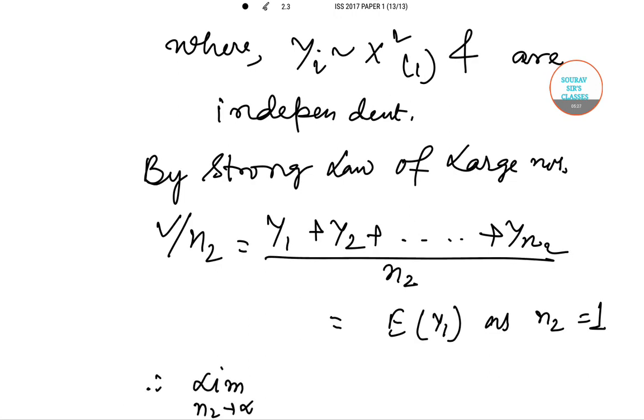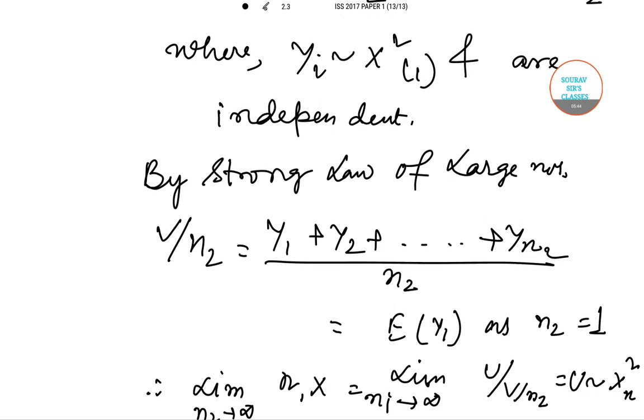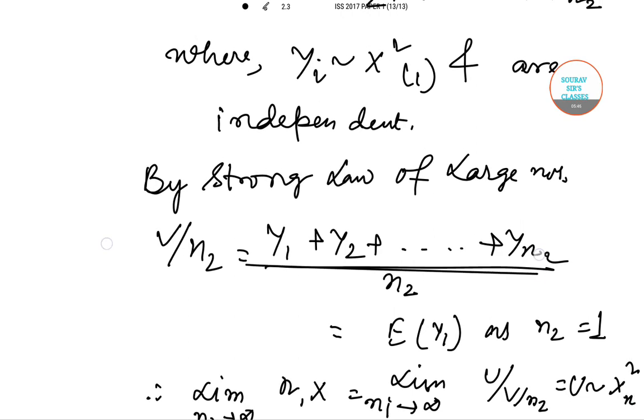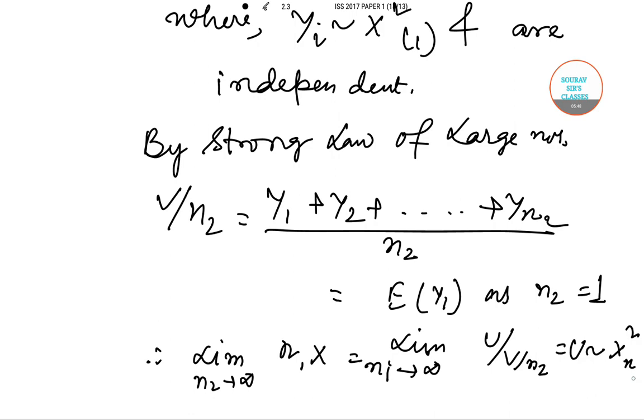So limit as n2 → ∞ of n1·X = limit as n2 → ∞ of U/(V/n2) = U, which belongs to chi-square n1 distribution.